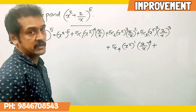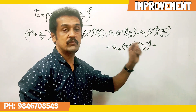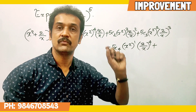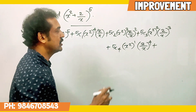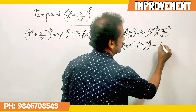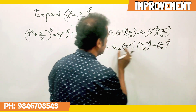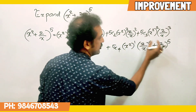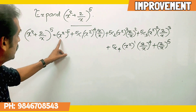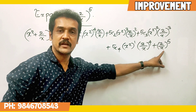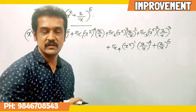Last term: 5C5, into 2 by x whole raise to 5.